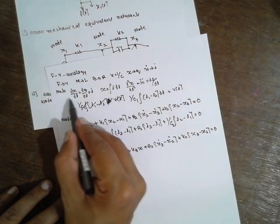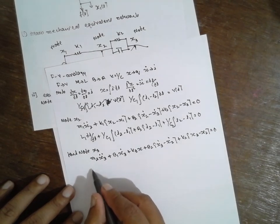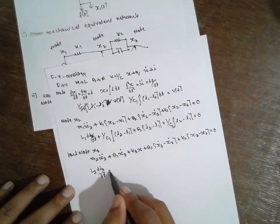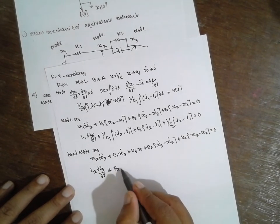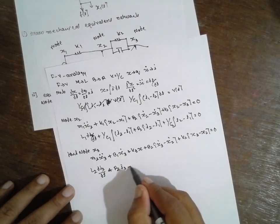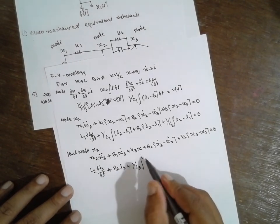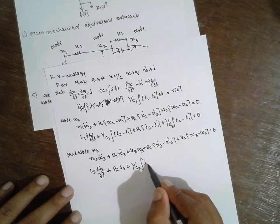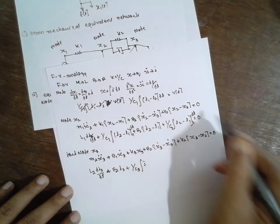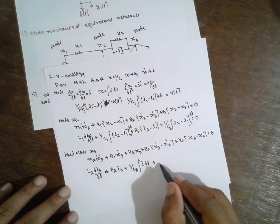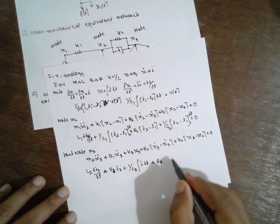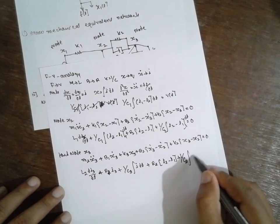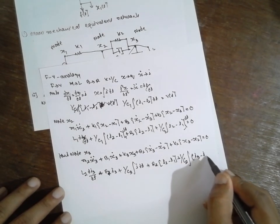Now replace with these terms. Mass becomes L2, so: L2 di3/dt plus R1 times i3 plus (1/C3) integral(i3) dt plus R2(i3 minus i2) plus (1/C2) integral(i3 minus i2) dt equals 0.